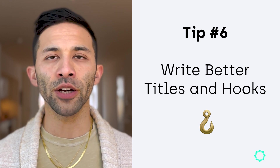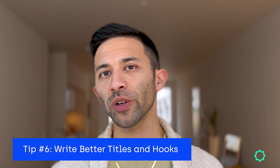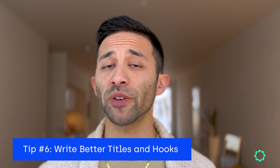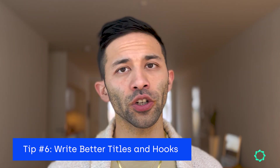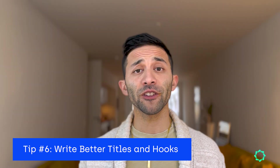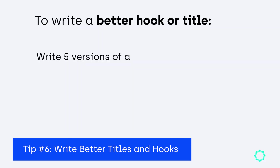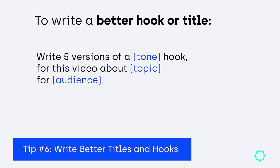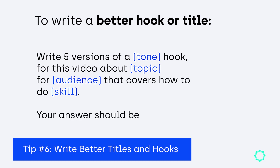Tip number six is about using ChatGPT to write better video titles and hooks. If you're like most content creators, you know how important it is to come up with a catchy title and hook to draw in your audience and have them watch your video. My prompt for this is: write five versions of a tone hook for this video about this topic for this audience that covers how to do this skill. Your answer should be six words or less.